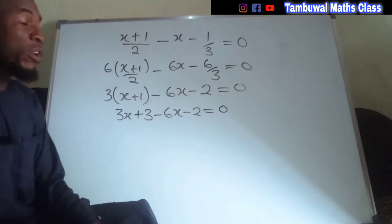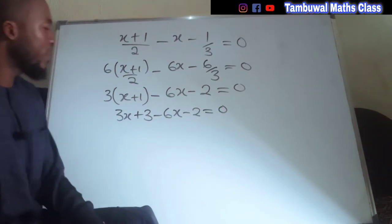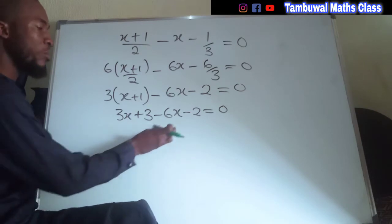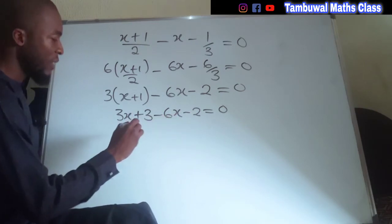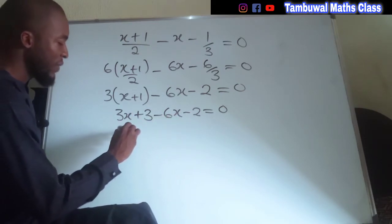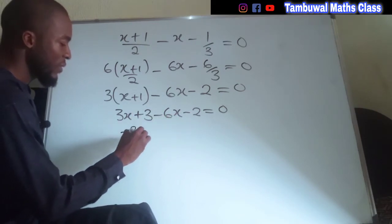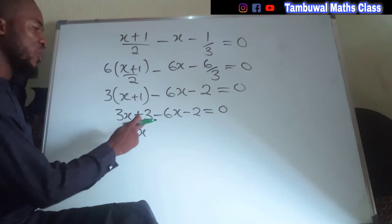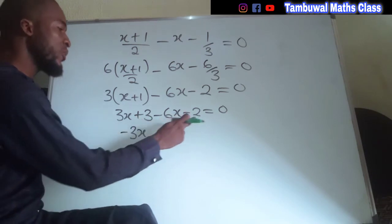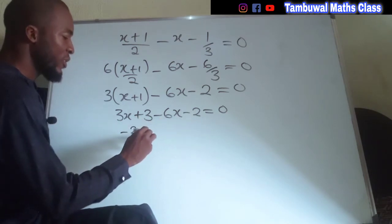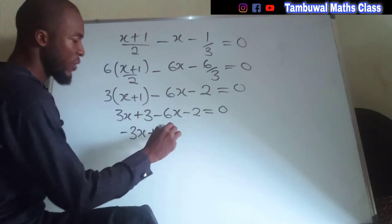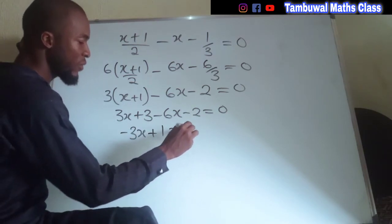We are going to collect the like terms: 3x minus 6x is negative 3x, and 3 minus 2 is positive 1. The whole of this equals zero.